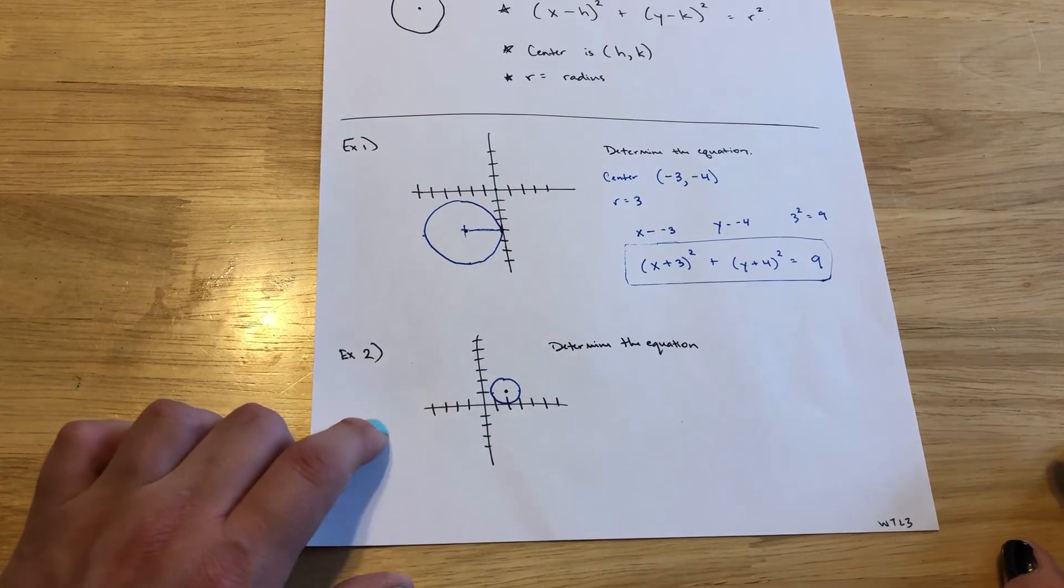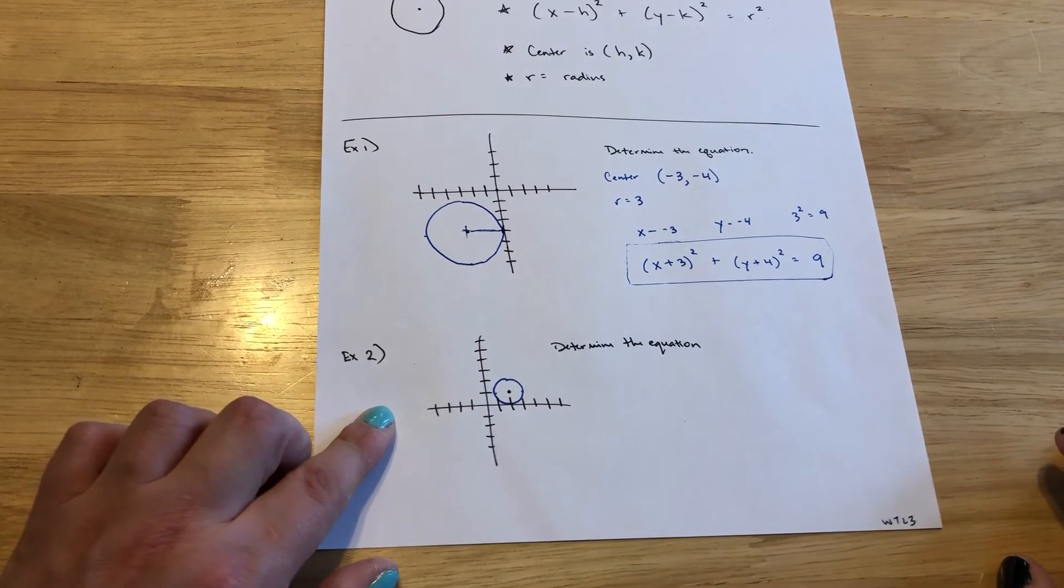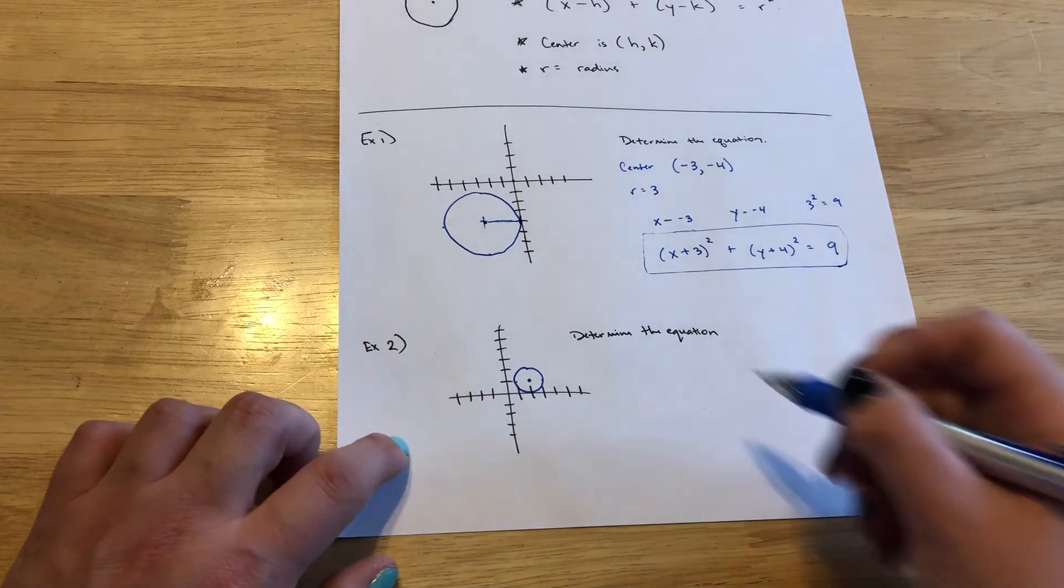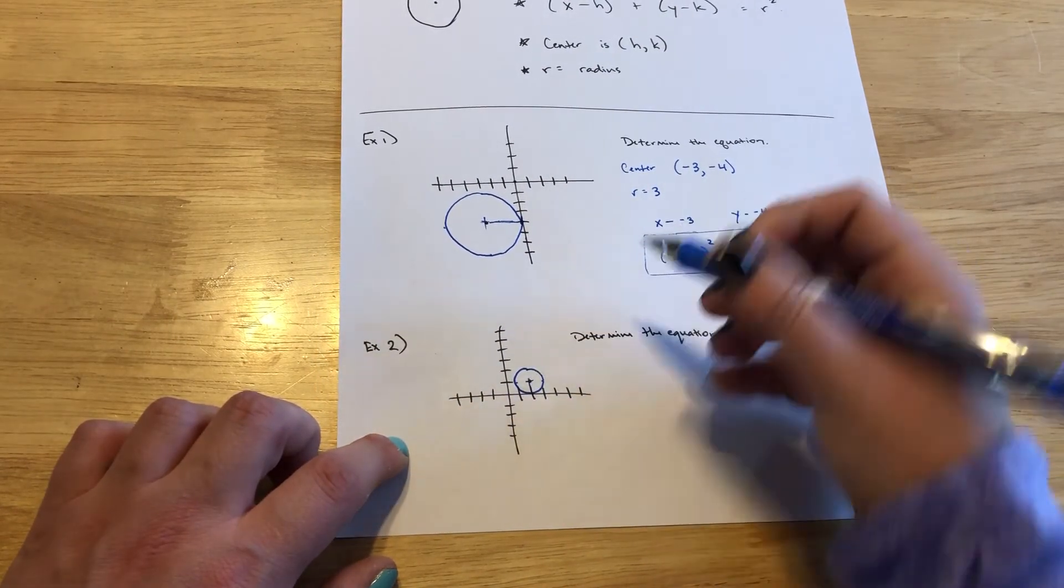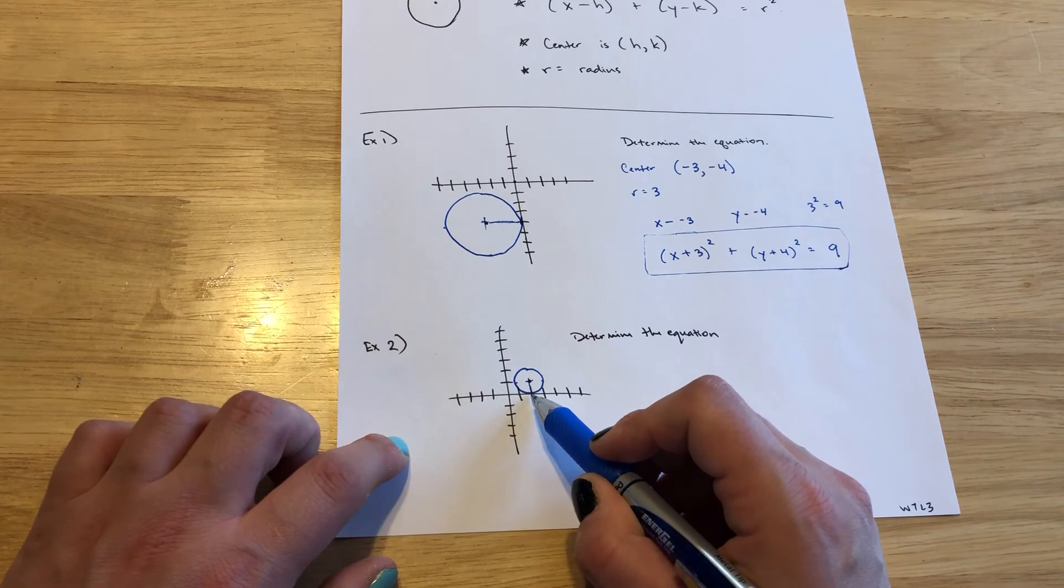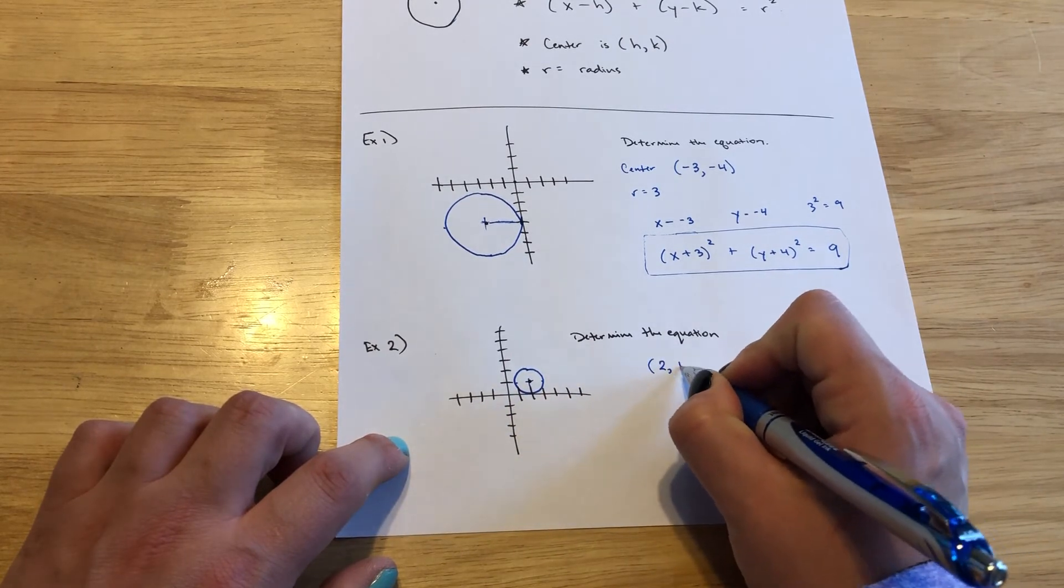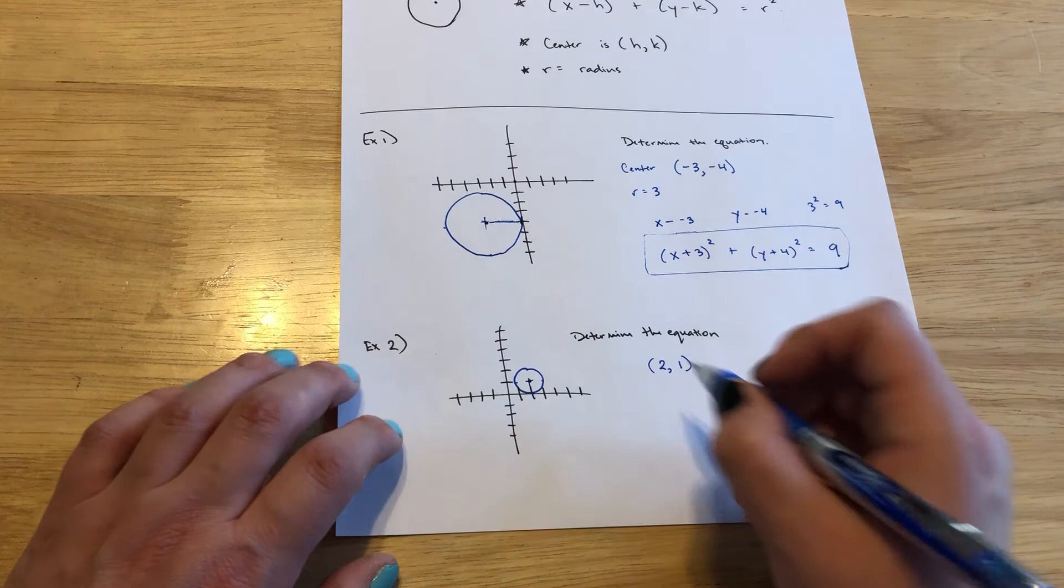If we take a look at example 2, just another problem for a little more practice. Determine the equation. Once again, let's locate the center. So that center is 2 units over and 1 unit up. So the x is 2 and the y is 1 for the center.